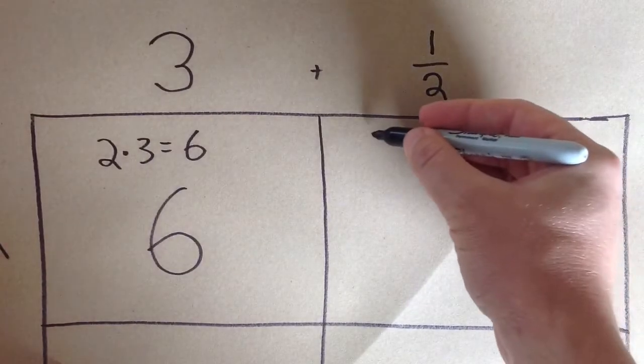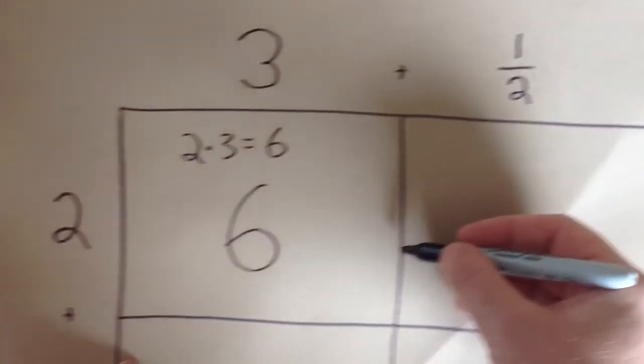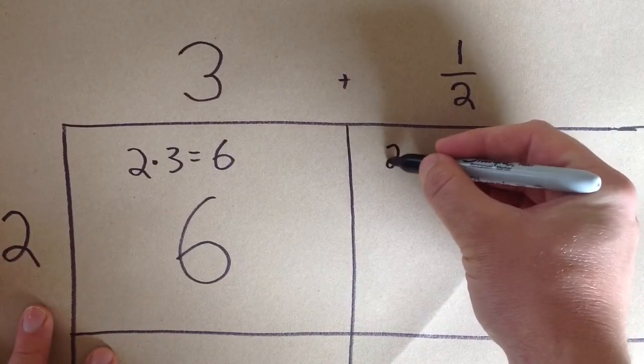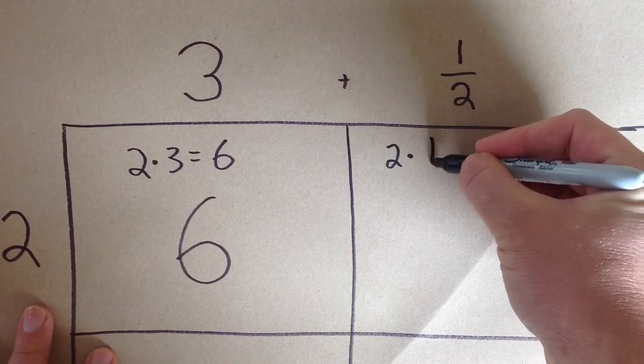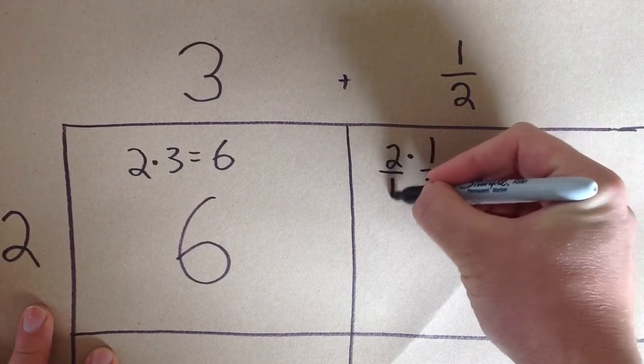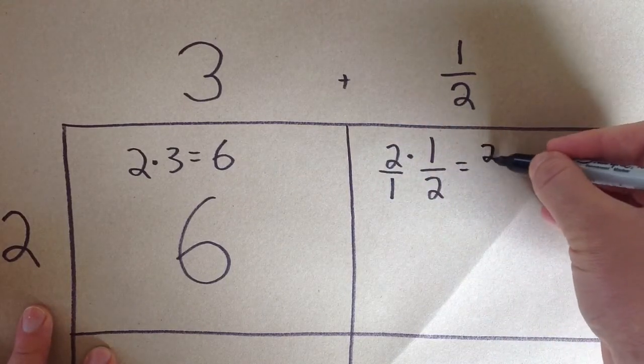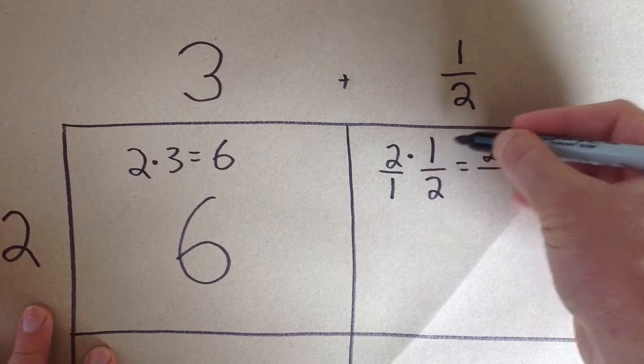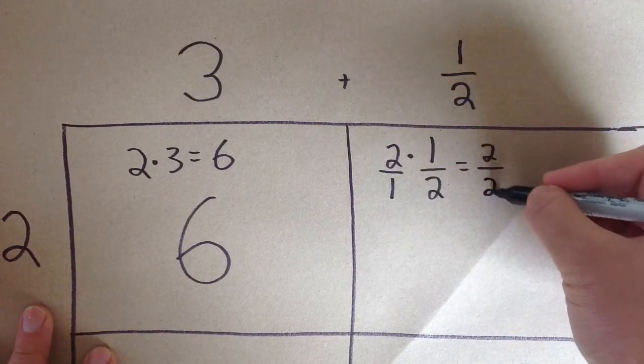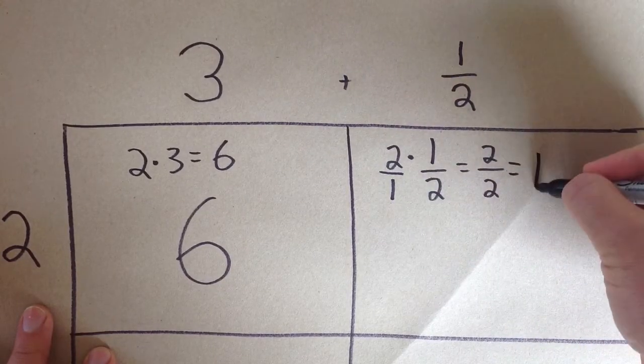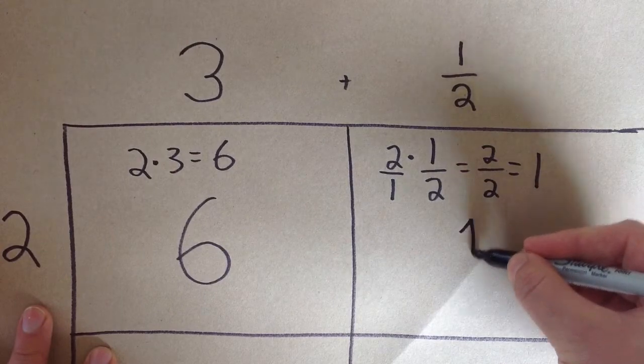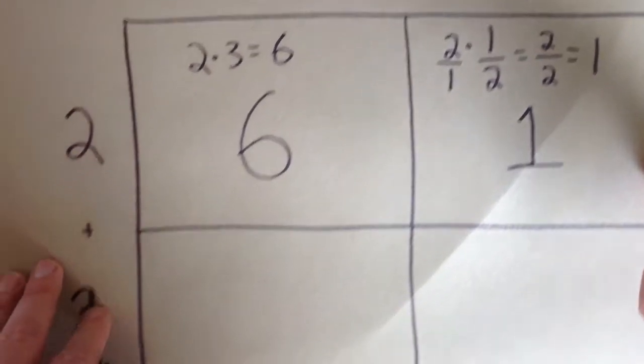Over here, I have this length here is still 2. So I'll put 2 times ½. Now, a 2 can also be written as 2 over 1. So I'll do 2 over 1 times 1 over 2. That gives me 2 times 1 is 2, and 1 times 2 is 2. So I get 2 over 2, which is just 1. So the area of this square is just 1.